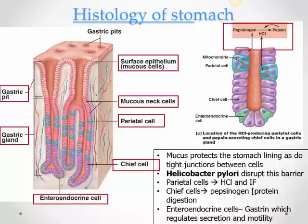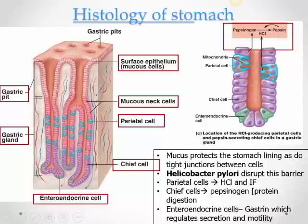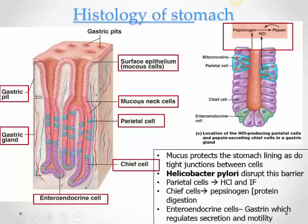In the histology of the stomach, the surface epithelium has columnar cells that produce mucus — there are no goblet cells. The epithelium invaginates to form gastric glands through gastric pits. In gastric glands, mucus neck cells protect the stomach from its own acid. Parietal cells, also called oxyntic cells, produce hydrochloric acid and intrinsic factor. Chief cells produce pepsinogen, which requires an acid medium to be activated to pepsin — the enzyme important for protein digestion.